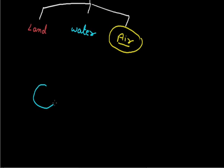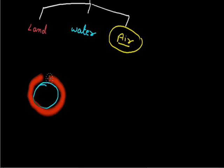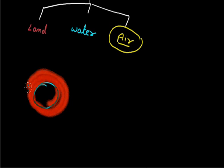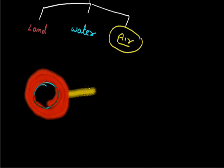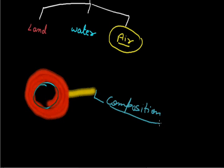Atmosphere is nothing but our earth surrounded by a gas or air which covers our earth from all its sides like a blanket. This red circle which I draw here is the atmosphere. In the atmosphere we find many gases. The composition of atmosphere means how the atmosphere is composed and by which gases. The next important topic is the layers of atmosphere.